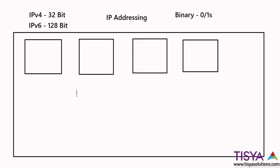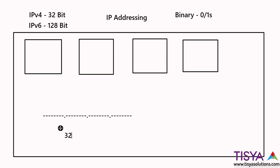If you understand IPv4, it's pretty natural to appreciate IPv6. To represent 32 bits, I have 32 spaces grouped into four sets of eight places — four octets of eight bits each.